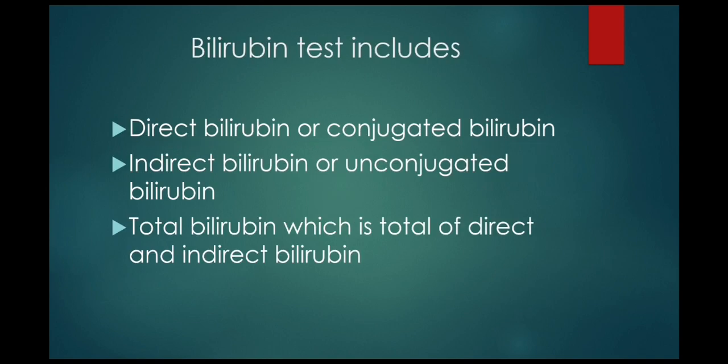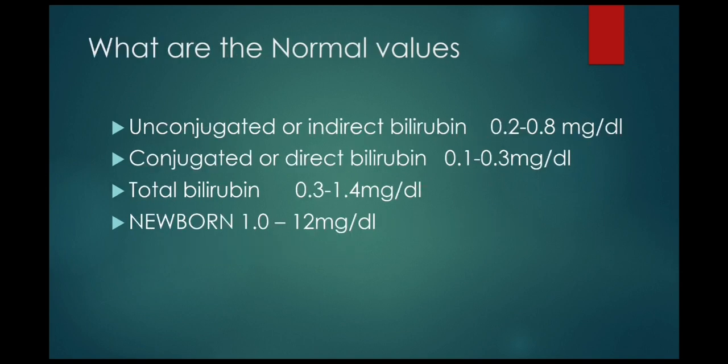The bilirubin test includes: direct bilirubin or conjugated bilirubin, indirect bilirubin or unconjugated bilirubin, and total bilirubin, which is the total of direct and indirect bilirubin. What are the normal values? The normal values of unconjugated or indirect bilirubin is 0.2 to 0.8 milligrams per deciliter.